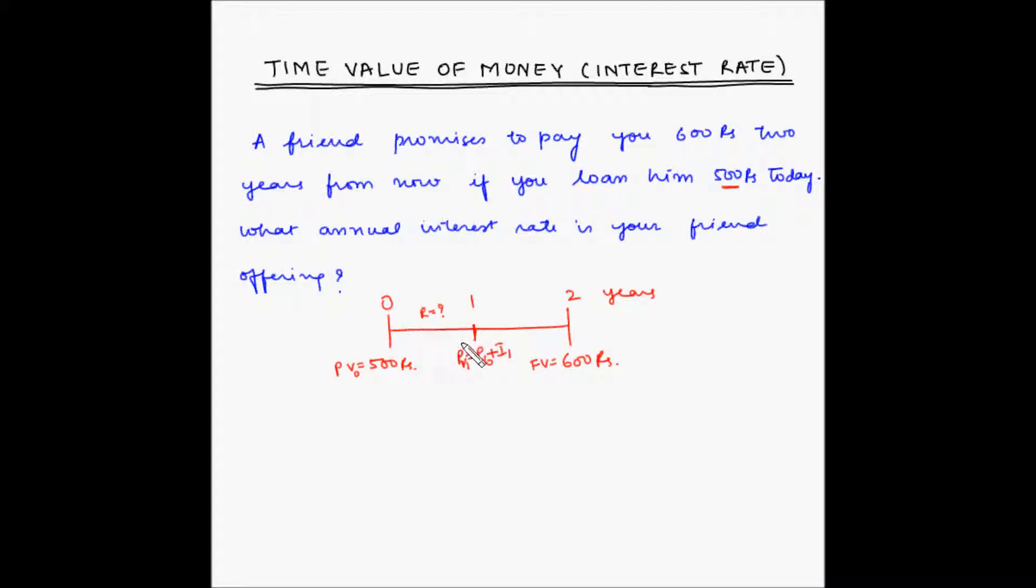So let's use the formula, which is the same formula as compound interest. Future value is equal to present value into (1 + r/100) to the power n. n is the number of compounding periods and r is the rate of interest per compounding period.